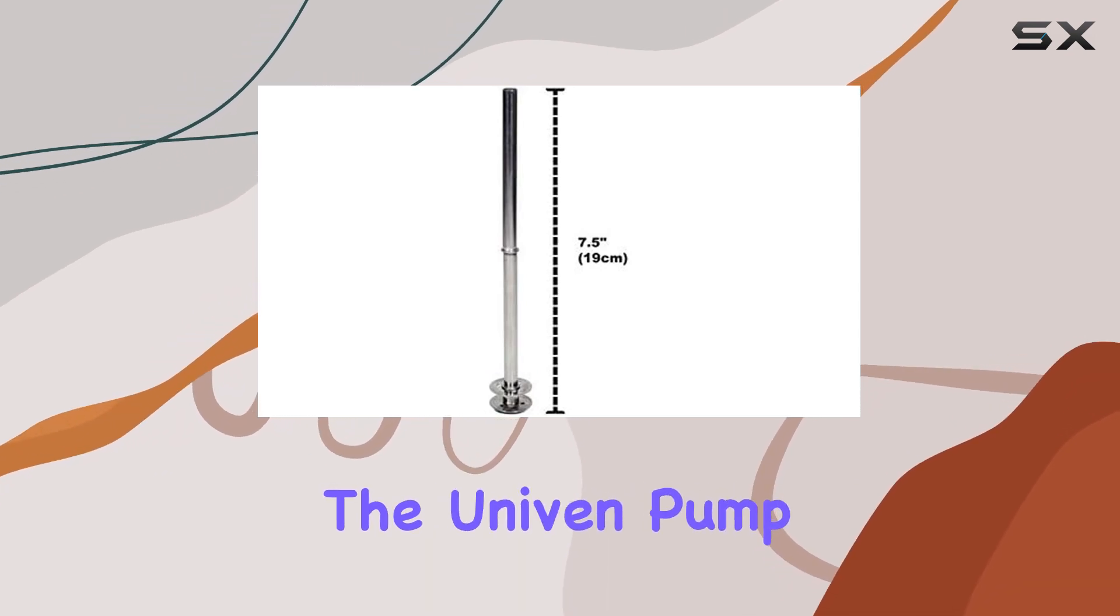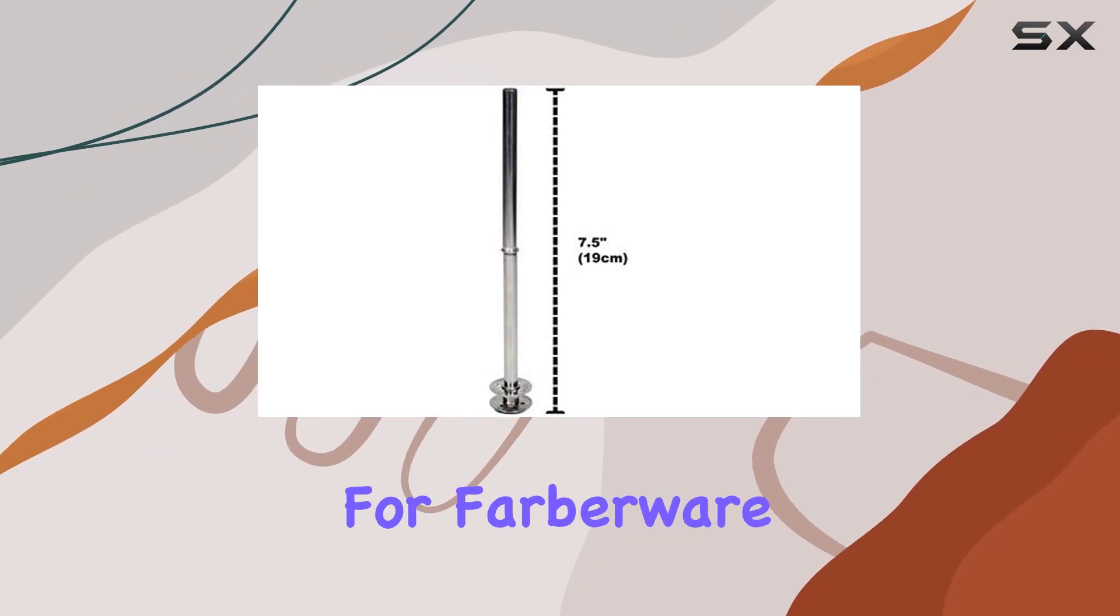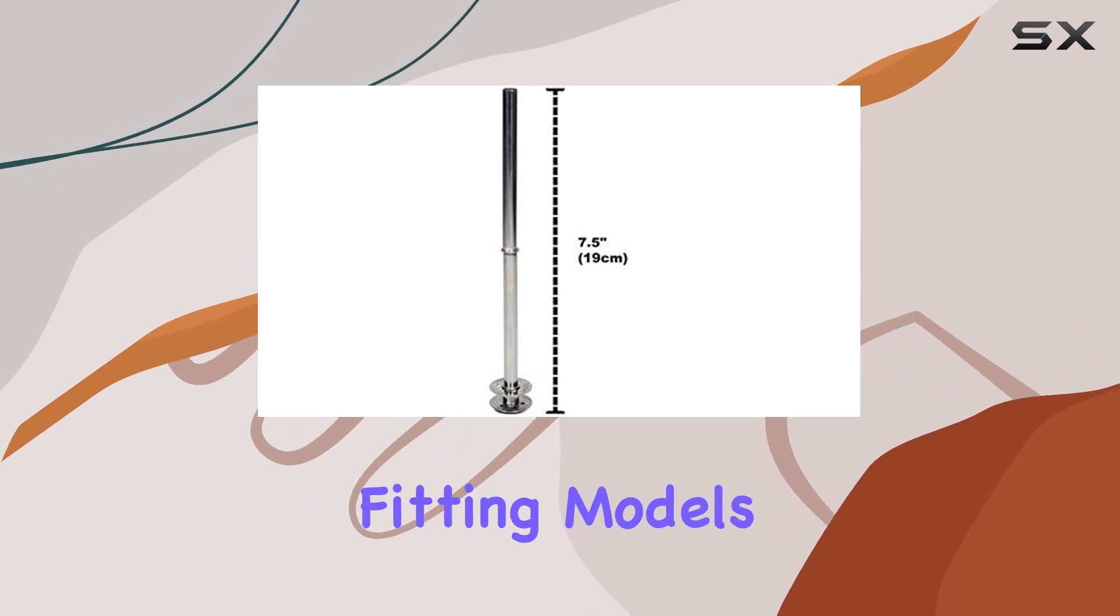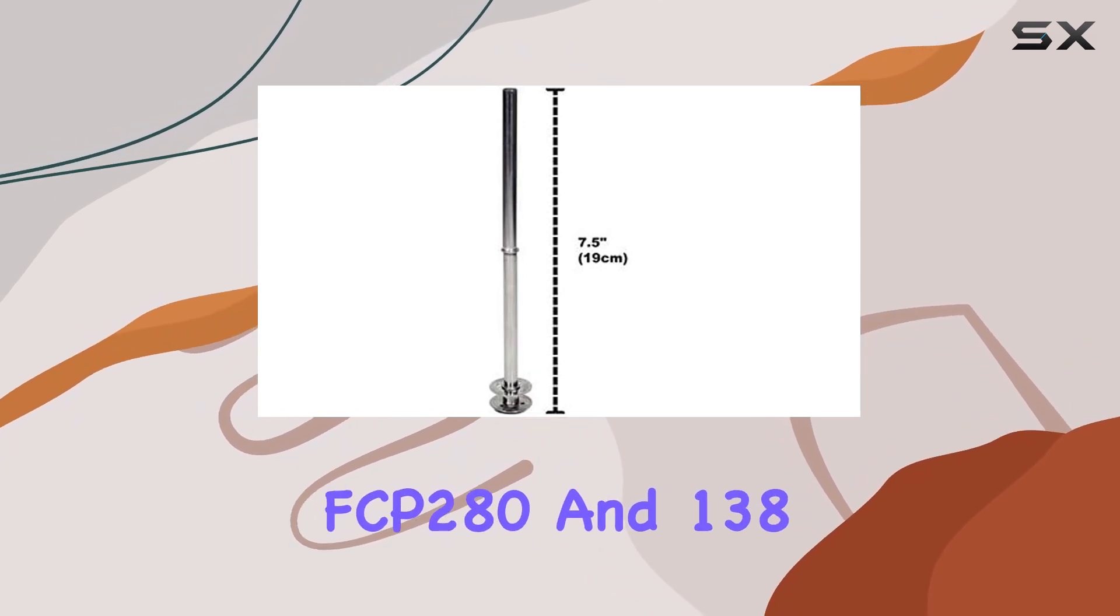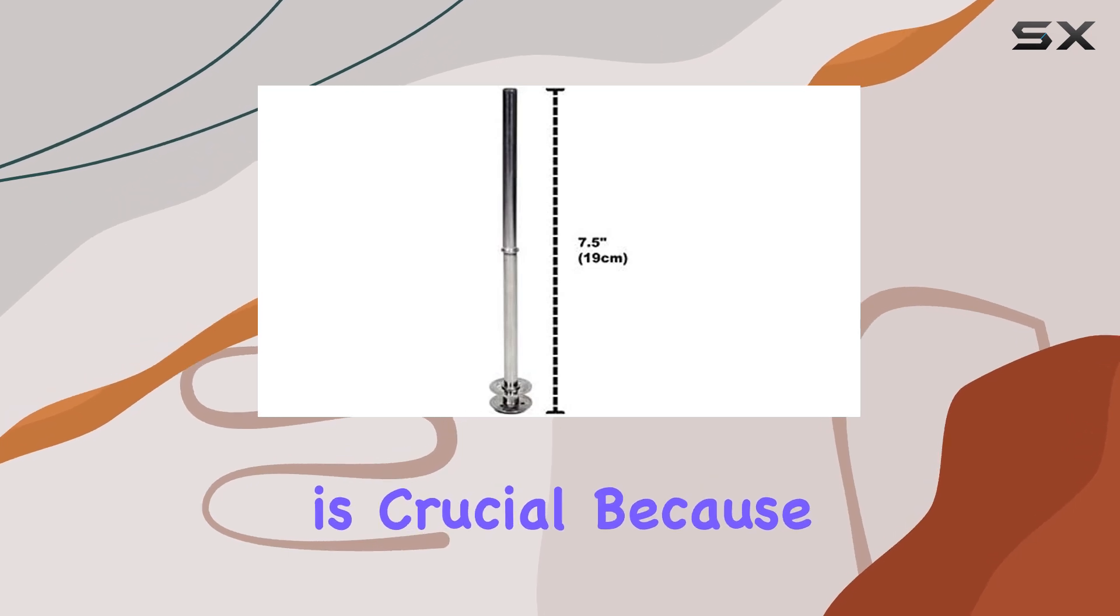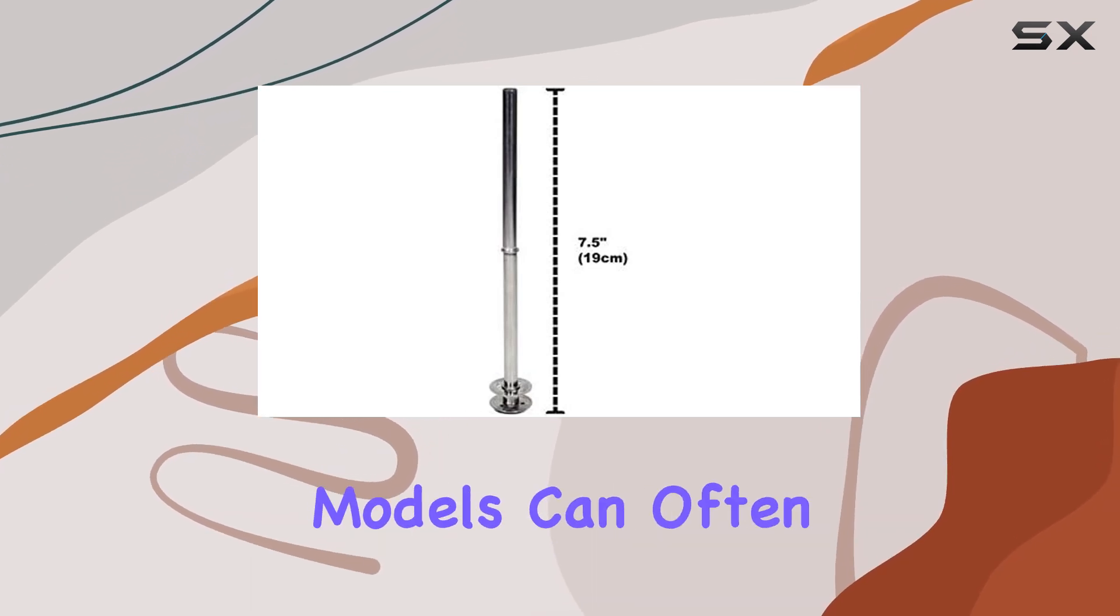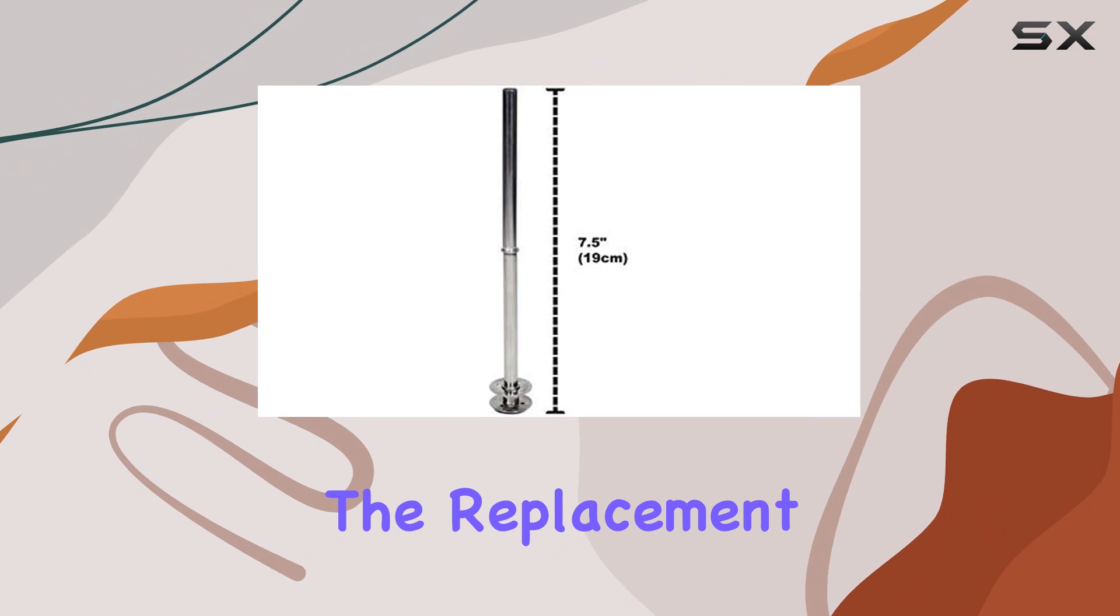The Univine pump tube is designed specifically for Farberware 8-cup percolators, fitting models FCP-280 and 138 seamlessly. This is crucial because finding the right parts for specific models can often be a challenge. The replacement part numbers FCP-280-04 and P13-1370 are directly targeted by this product, ensuring that users are not left guessing whether they've chosen the right component.